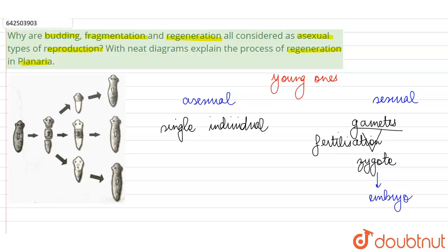In sexual reproduction, gametes undergo fertilization and produce the zygote, which turns into the embryo after repeated cell divisions. In the case of asexual reproduction, different male and female parents are not required. A single individual is capable of producing offspring, and since there is only one parent, the offspring are going to be clones of their parent as well as each other.